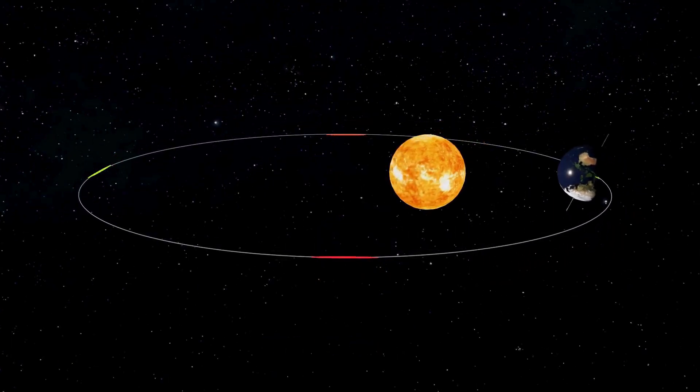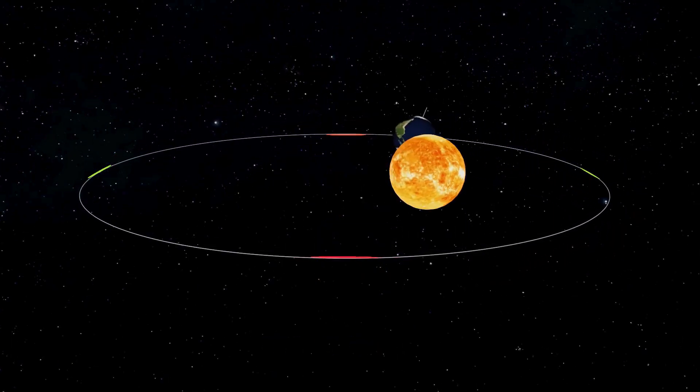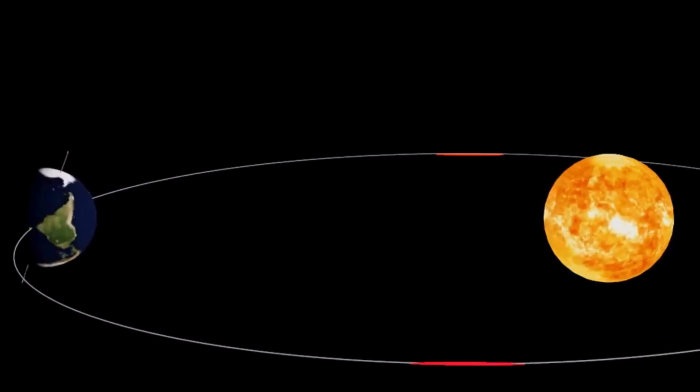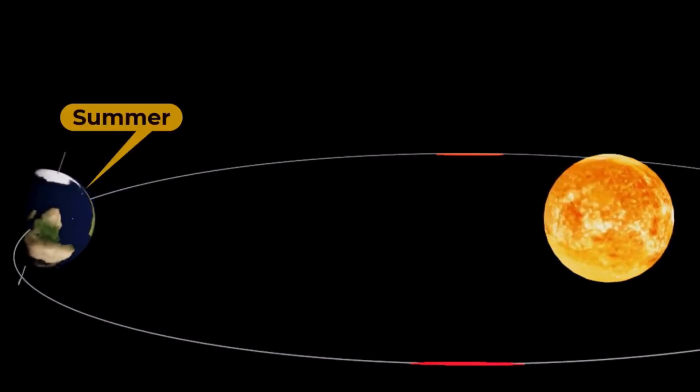And as Earth orbits the sun, different parts of the planet get more or less sunlight. When the northern hemisphere is tilted towards the sun, it's summer there because that part of Earth is getting more direct sunlight.